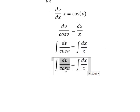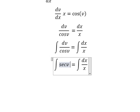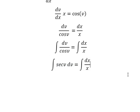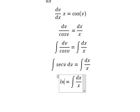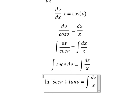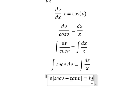So this one we have secant of v dv. The integration of this one, we have ln of the absolute value of secant of v plus tan v. This one, we have ln of the absolute value of x, and I will put the constant c.